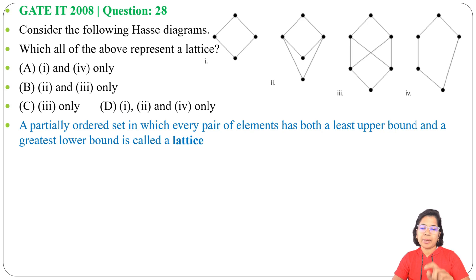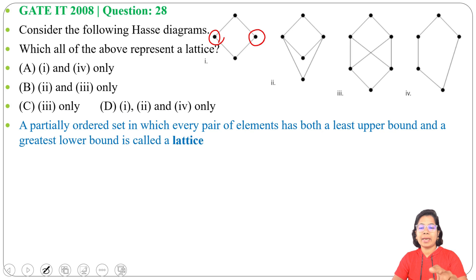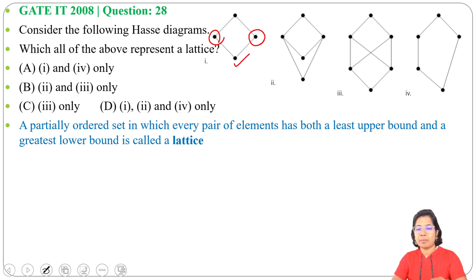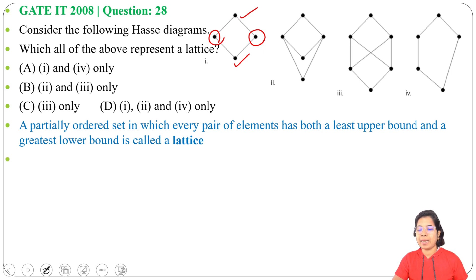Let's check the first Hasse diagram. We check the incomparable pairs. For those two nodes, the greatest lower bound is one node and the least upper bound is another. As both GLB and LUB are present for every pair, the first diagram is a lattice.